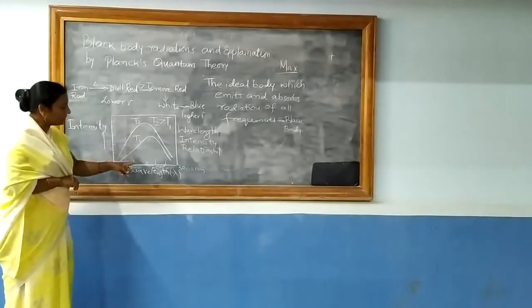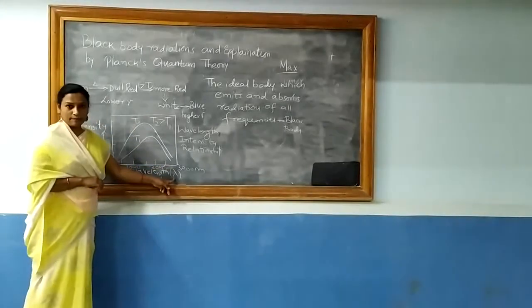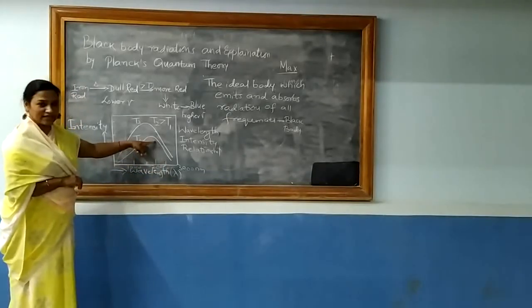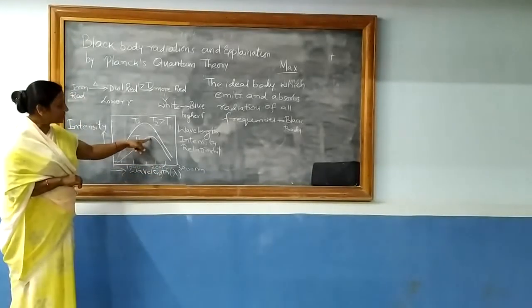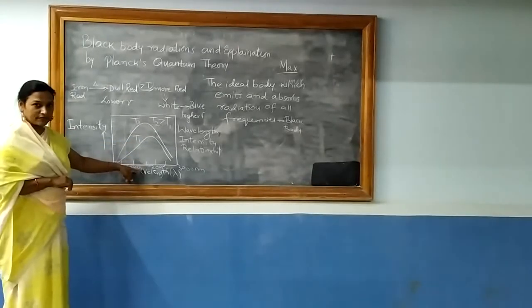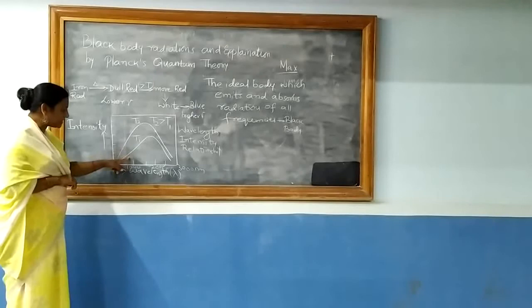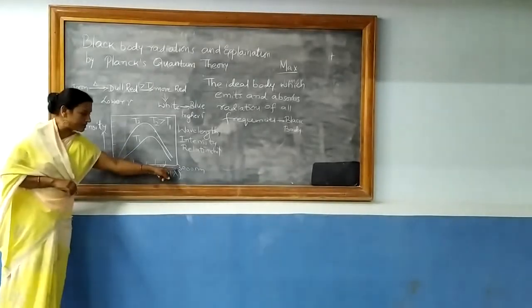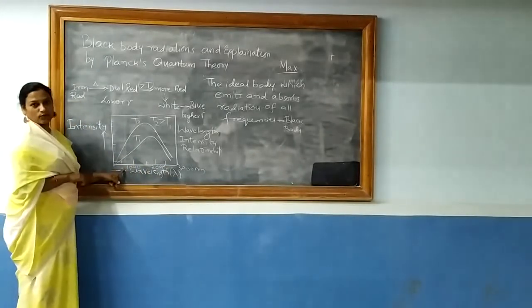For a given wavelength lambda, as the temperature increases, the intensity at first increases, reaches a maximum at lower wavelength, and finally goes on decreasing. The intensity decreases as the wavelength decreases. Here it is 3000 nanometers, here it is 1000 nanometers.